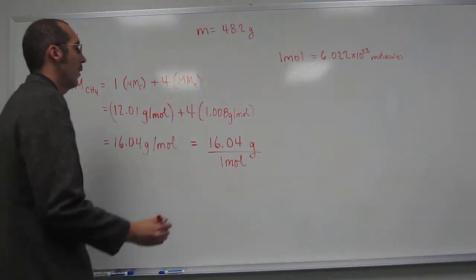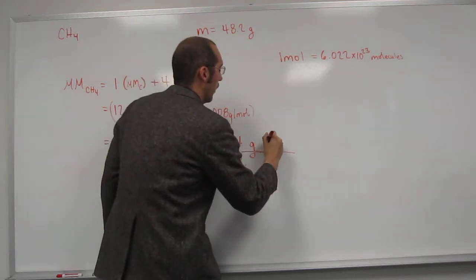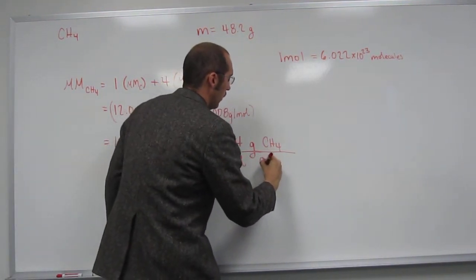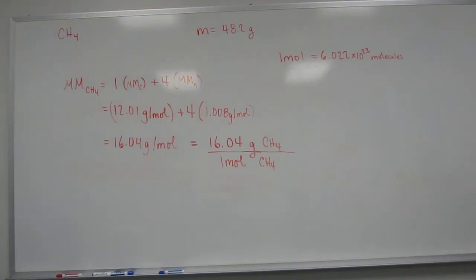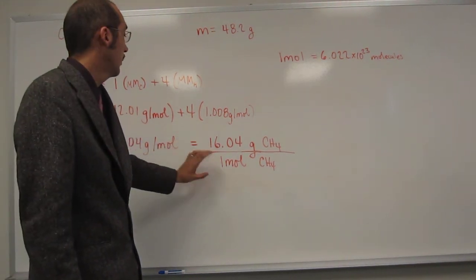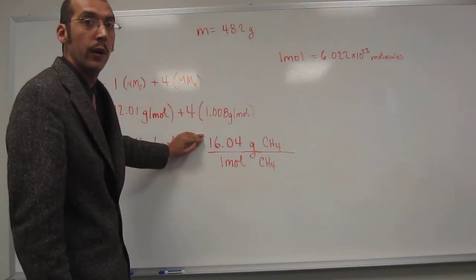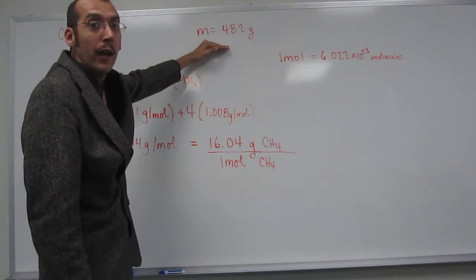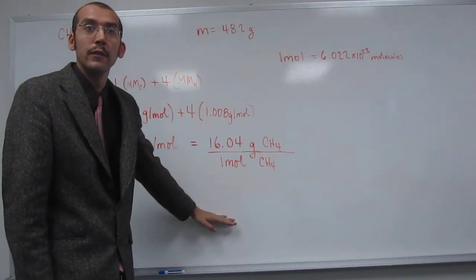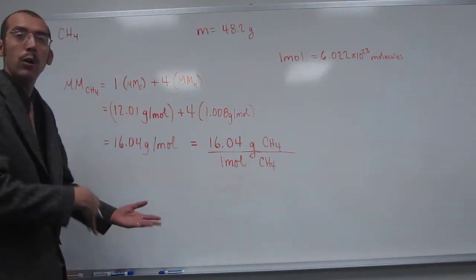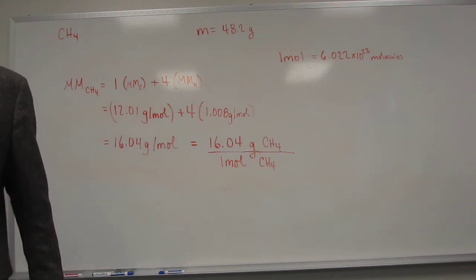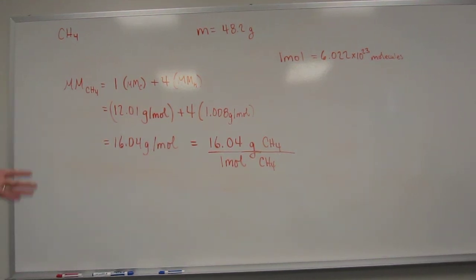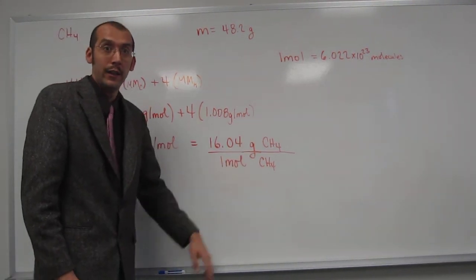And in fact, it's even more than that. It's 16.04 grams of methane is one mole of methane. Does that make sense? So now we've got a conversion factor for methane. We can say one mole of methane equals 16.04 grams of methane. And we know how many grams of methane we have, so we should be able to figure out how many moles we've got. So let's do that. Moles is what we're looking for. Can moles be on the bottom if that's what we're looking for? No. It has to be on the top. And that's the only thing that we can have. We can't have grams there anymore either. They've got to go.